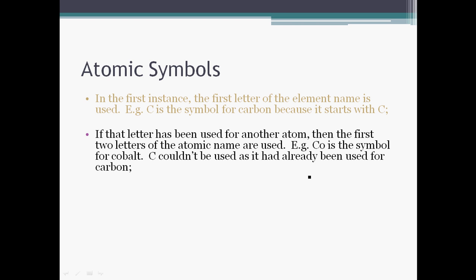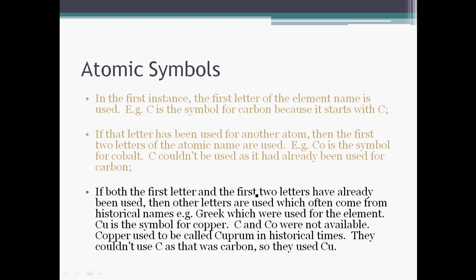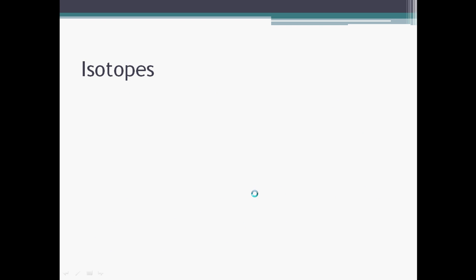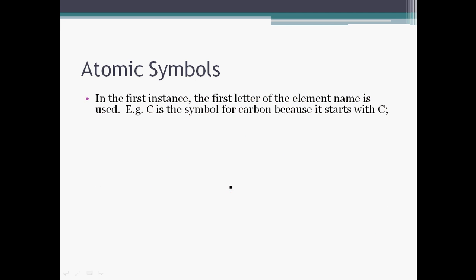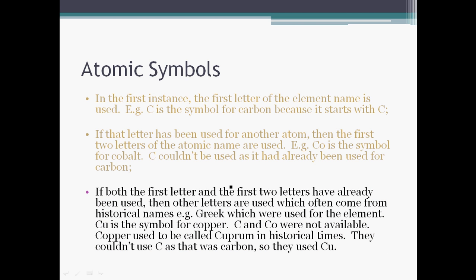is that when you start looking at the symbols for particular elements, you also see that sometimes they're not logically represented in the way in which they're written. So for example, copper. Copper, you might think would be written C, O as the symbol, but of course that's already been taken by cobalt, so we can't use that. So what people normally do is use the Latin name. So the Latin name for copper is cuprum, so therefore the symbol for copper is Cu, and of course because there's a second letter there, it's actually lowercase.